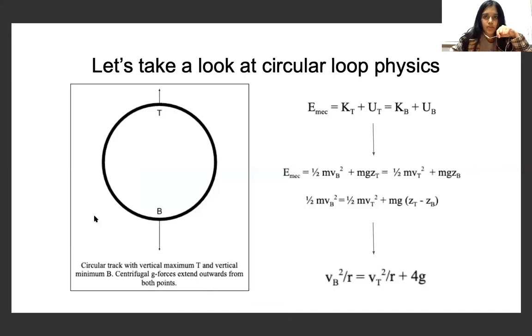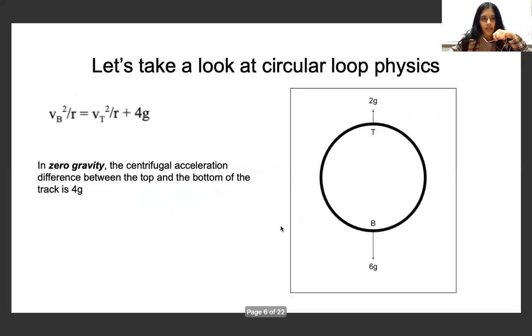So let's just look at circular loop physics briefly to understand what's wrong here. As you can see in this diagram, T corresponds to the top of the loop and B corresponds to the bottom of the loop. If we calculate the centrifugal forces at the top and the bottom of the loop, we find that they differ in 4G. So in zero gravity, the centrifugal acceleration difference between the top and the bottom of the track is 4G.